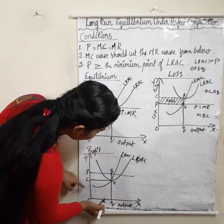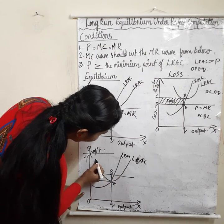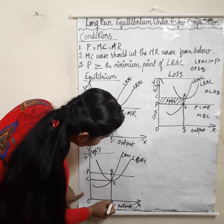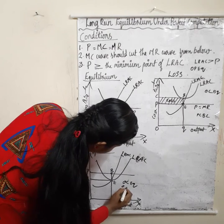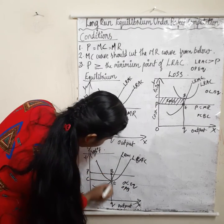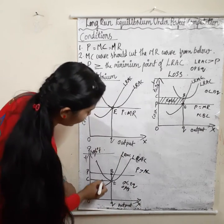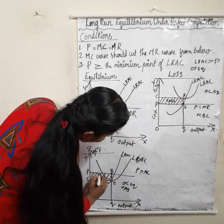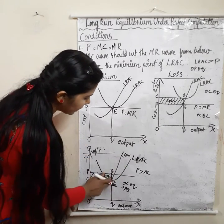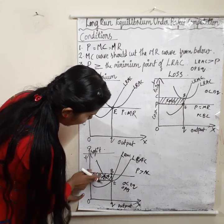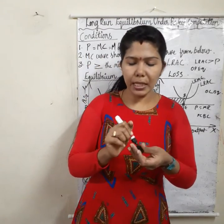In this profit situation, OQBP is the price area. But the average cost curve is below the price — cost is OCEQ only, while price is OPBQ. Price is greater than average cost. That gap — that is super normal profit for the firm under perfect competition. So this is long run equilibrium under perfect competition.